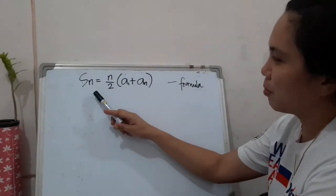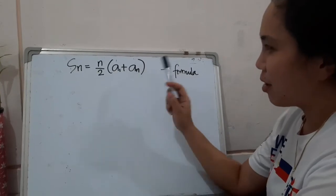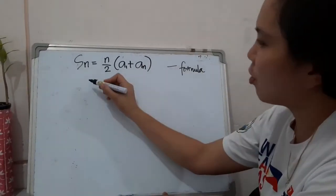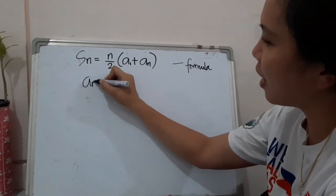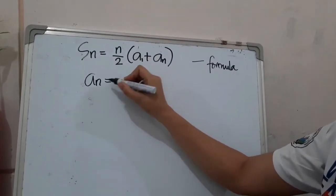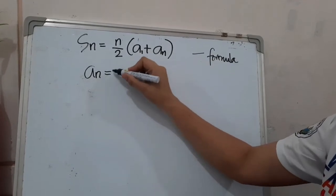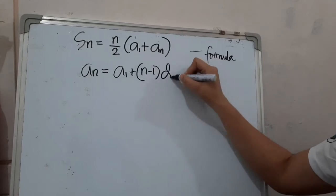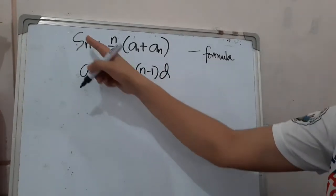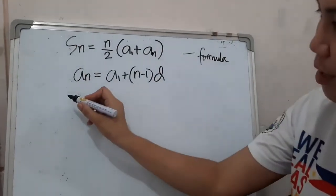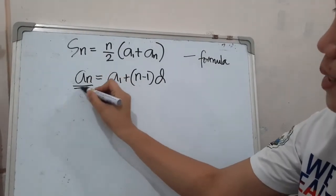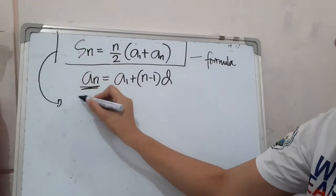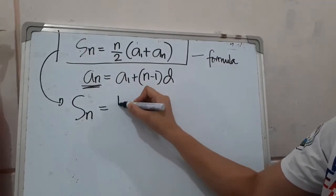If the problem does not have a last term, then we use another formula. We derive it by combining our sum formula with the nth term formula. Since a sub n equals a sub 1 plus n minus 1 times d, we substitute a sub n in the first formula, giving: S sub n equals n over 2 times the first term plus a sub n, where a sub n is replaced.